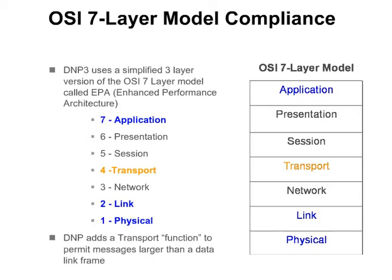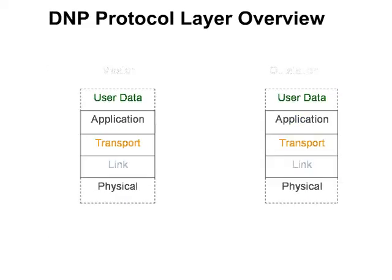In theory, each layer of the stack performs a set of functions to communicate with the same layer in another device, using the next lower layer for more primitive functions. Each layer should be independent of the layers above and below it. Each layer in the stack communicates with the same layer in another device, relying on lower layers to provide more primitive functions.